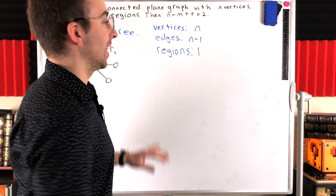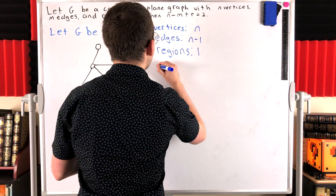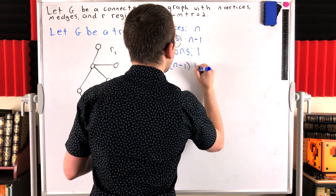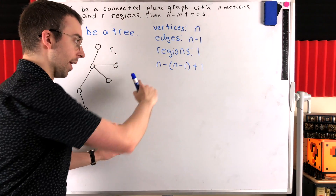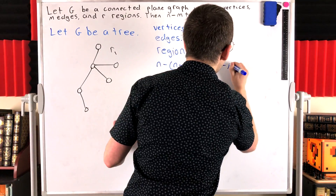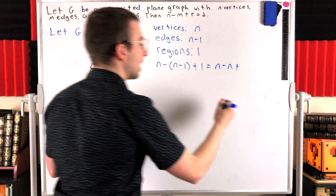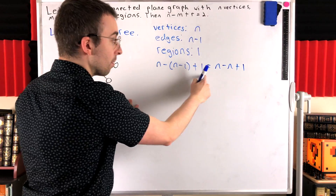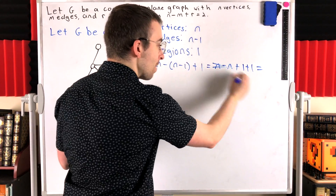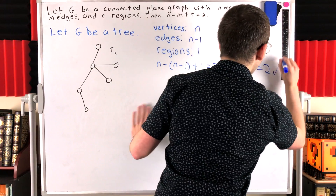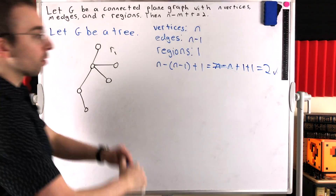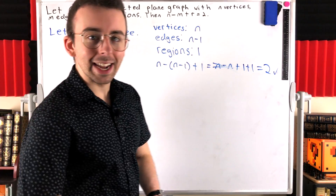Now we can just check our formula. The number of vertices N, minus the number of edges N minus one, plus the number of regions which is one: we distribute the negative to get N minus N plus one, and then plus one. The plus one and minus one cancel, and one plus one is two — it works. We have now proven Euler's formula for connected plane trees.